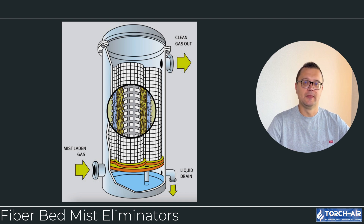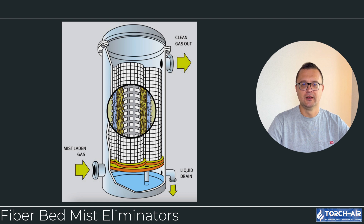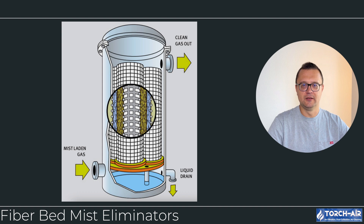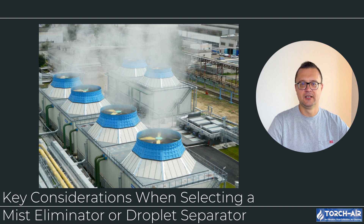Fiber bed mist eliminators, also known as candle filters, use tightly packed fibers to trap mist and aerosols as the gas stream passes through the bed. The mist droplets coalesce on the fibers and then drain down to be removed. Best for ultra-fine mist and aerosols, they are extremely efficient at removing submicron droplets, making them ideal for applications like sulfuric acid production or chemical processing. However, they require more maintenance and may need frequent cleaning or replacement depending on the dust or particle load.